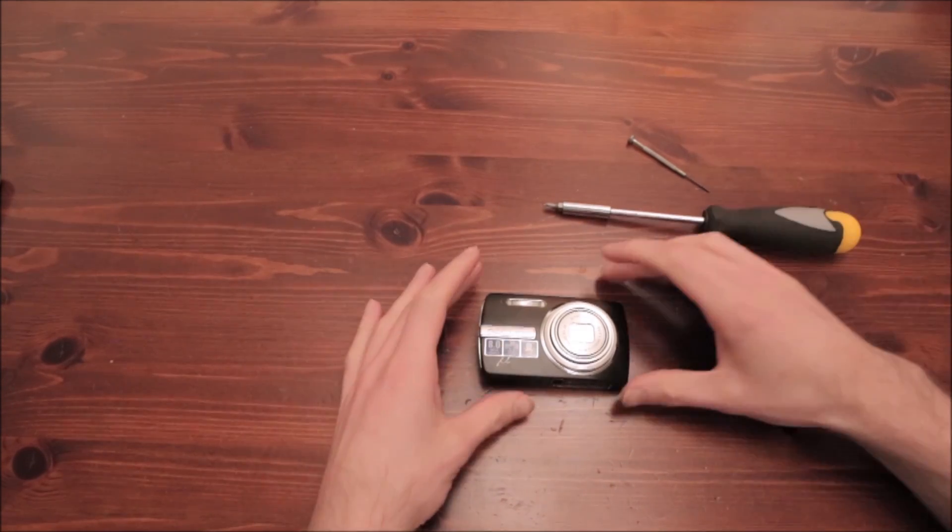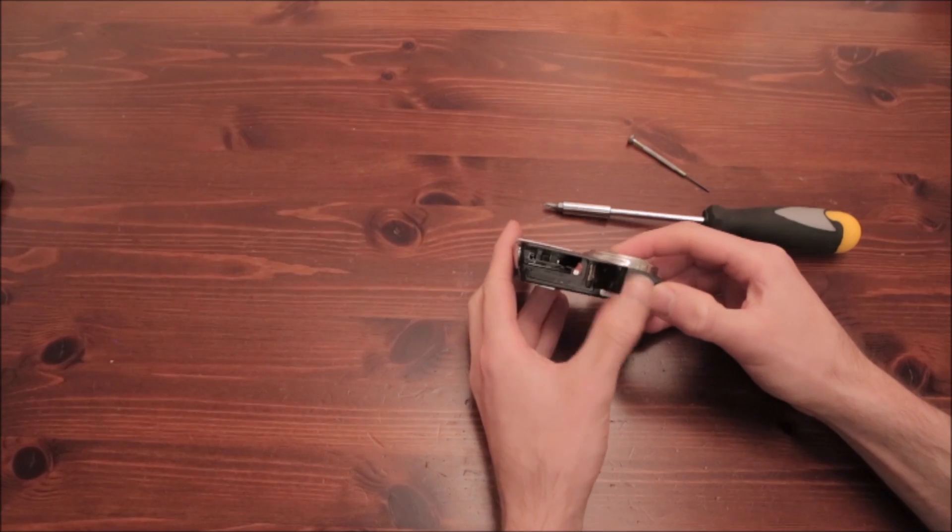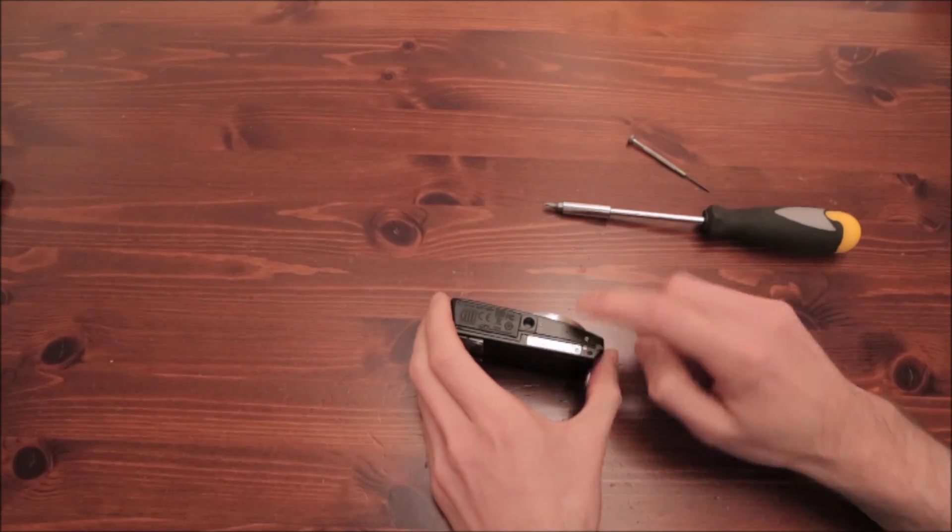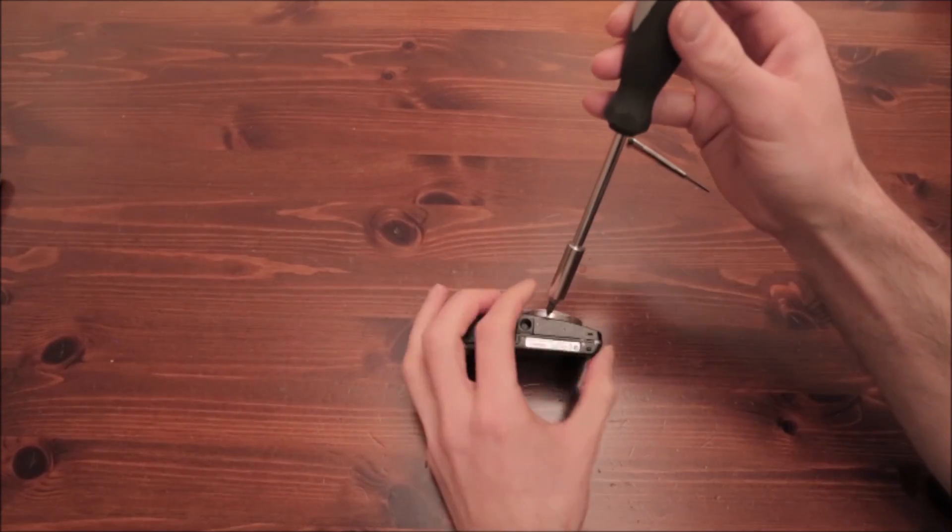So the very first step is to remove the battery and make sure the camera has no power, and then we can start unscrewing the different parts of the camera.